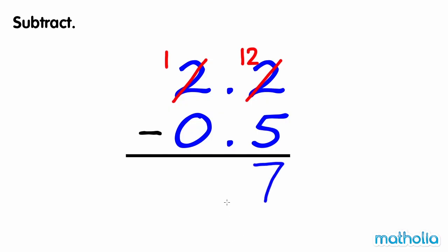Write the decimal point. Now subtract the ones. 1 one minus 0 ones equals 1 one. So 2.2 minus 0.5 equals 1.7.